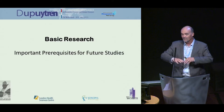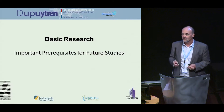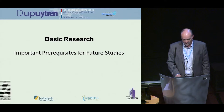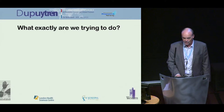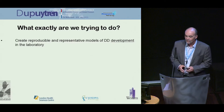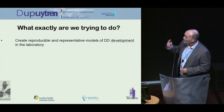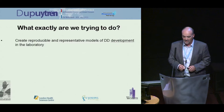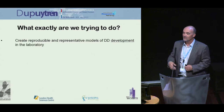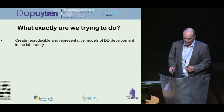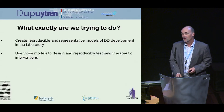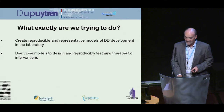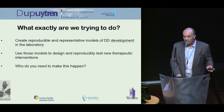They're a lot smarter than I am and we might be able to come up with some general ideas covering all the things Joe covered in terms of research priorities. I have no conflicts of interest. From a basic science perspective, what we should be trying to do is create a reproducible and representative model of Dupuytren's disease development in the lab.